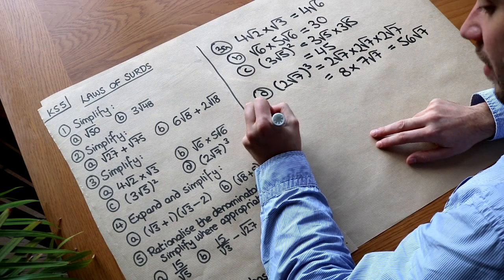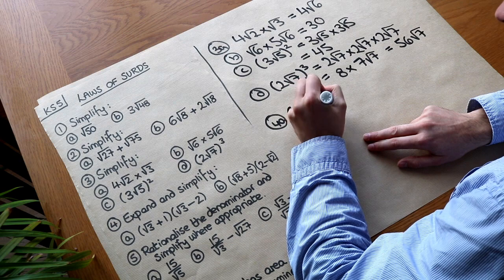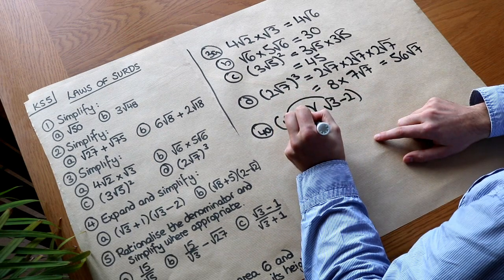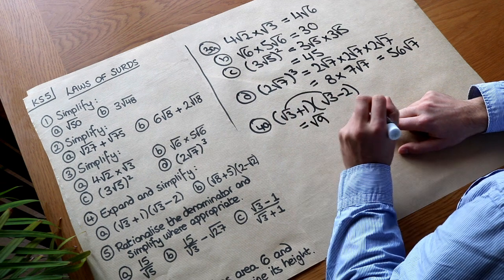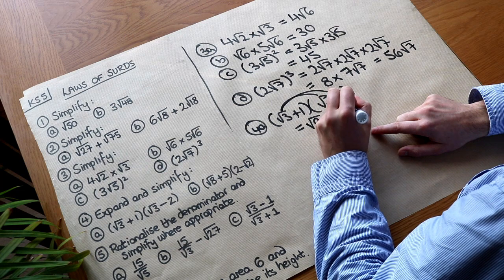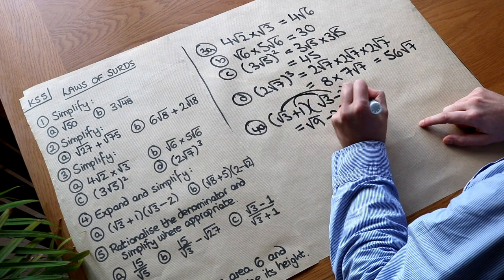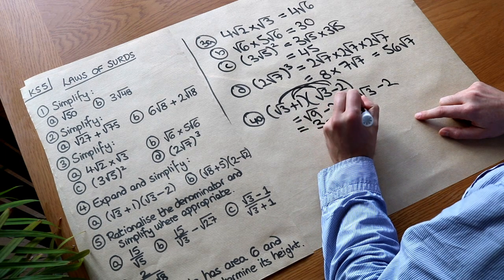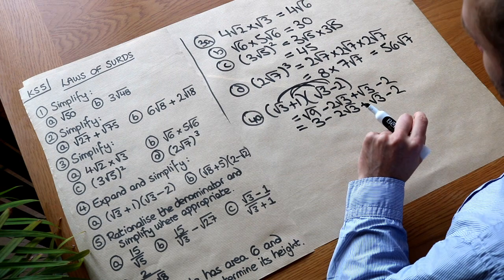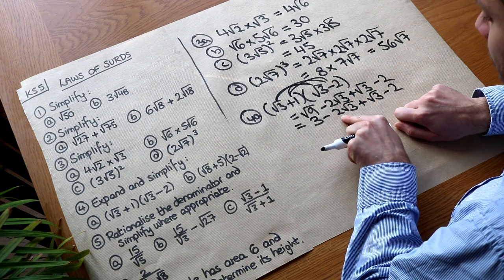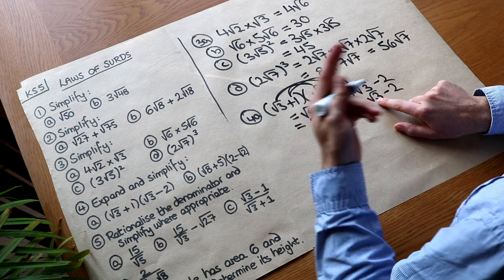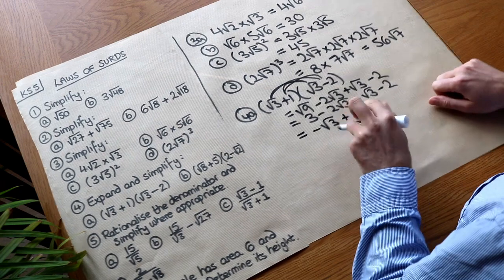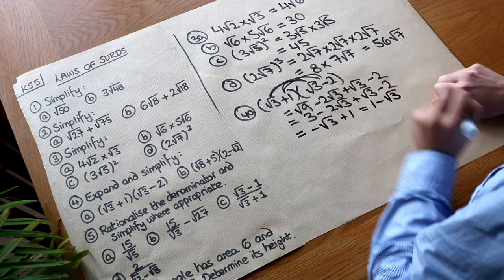Now we've got some brackets to expand. For (root 3 + 1)(root 3 − 2), we multiply each term in the first bracket by each term in the second. Root 3 times root 3 is root 9, which is 3. Root 3 times minus 2 is minus 2 root 3. Then 1 times root 3 is plus root 3, and 1 times minus 2 is minus 2. Collecting terms: the root 3 terms give minus 2 root 3 plus root 3, which is minus root 3, and 3 minus 2 is 1. So the answer is 1 minus root 3.